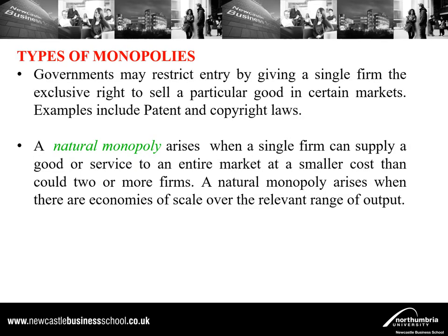How can monopolies arise? First, governments restrict entry by giving a single firm the exclusive right to sell a particular good. Examples include patents, where a firm can produce intellectual property such as a medication, and copyright laws where only one publisher can sell a specific book. Another example is a telecommunications monopoly that is the only one licensed to provide landlines — even though there may be competitors in communications, that firm is still a monopolist for landline services.